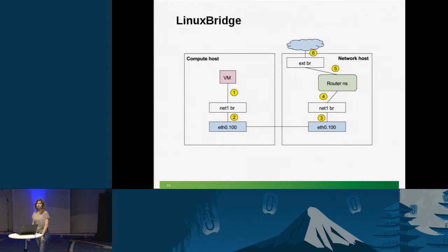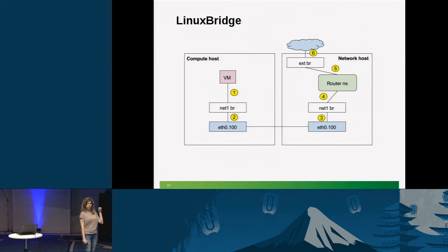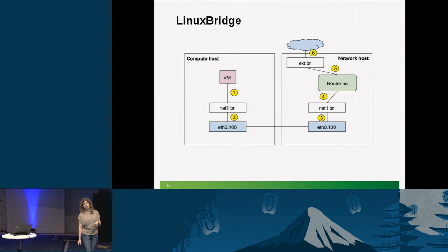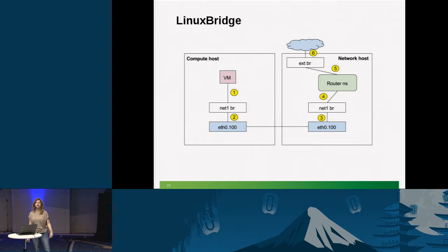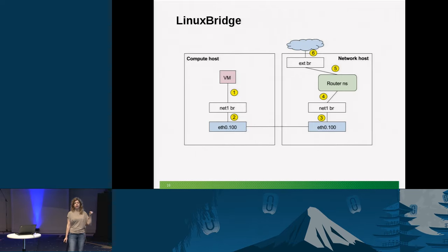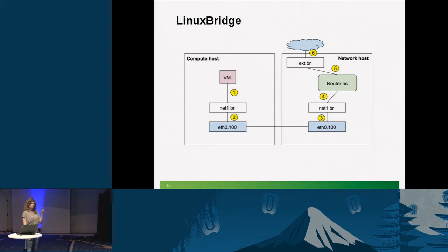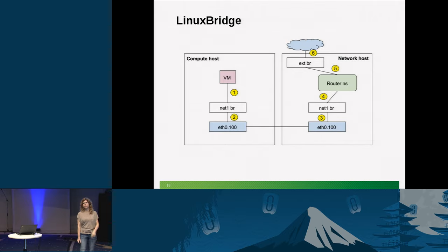In the Linux bridge implementation, the VM sends the packet through the net1 bridge at point one, then through eth0.100 at point two, tagged with VLAN 100 going outside. It's received on the network host at point three on the net1 bridge. At point four it reaches the router namespace — again the default gateway — where it's SNATed. At point five it goes through the external bridge, and at point six it reaches the outside world.